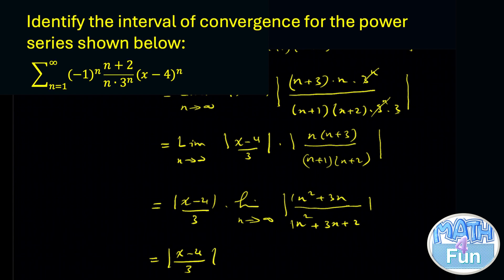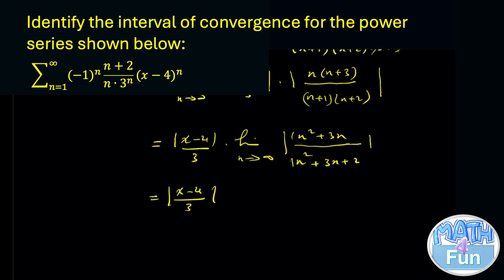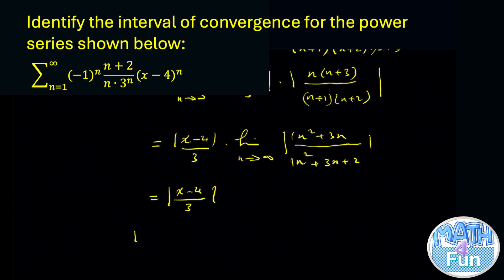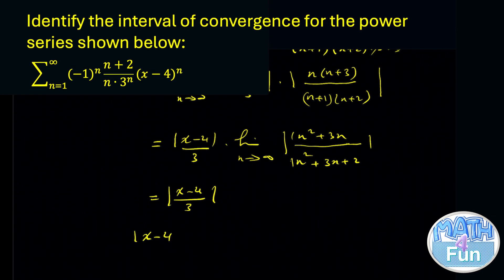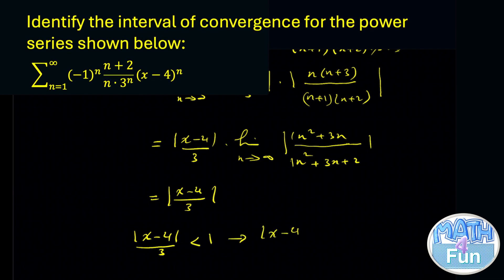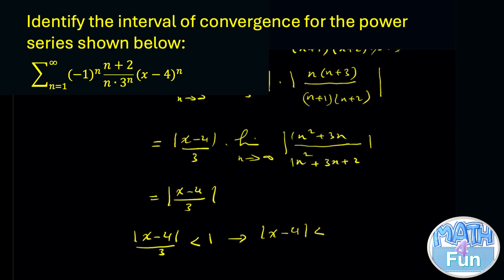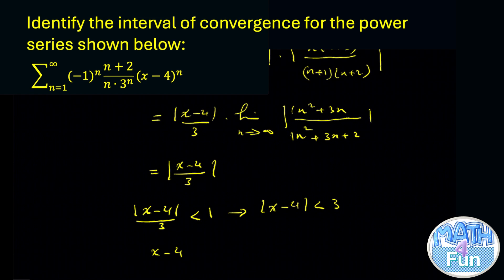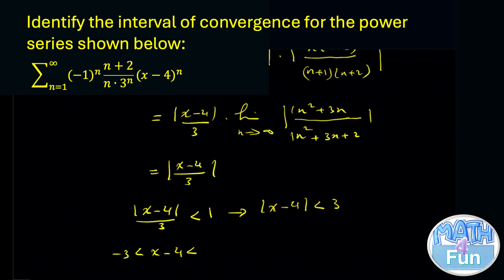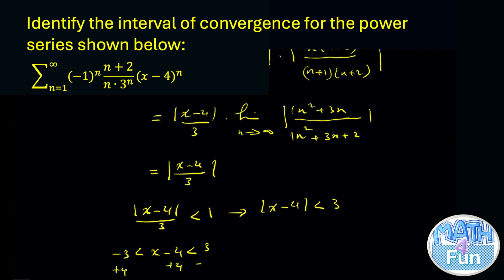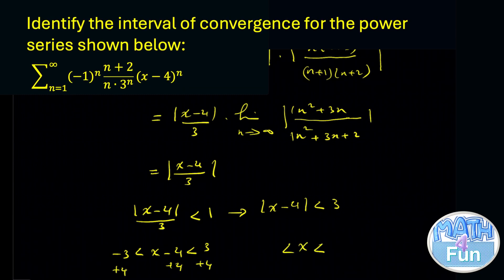For the series to converge, this limit must be less than 1. So we need the absolute value of x minus 4 over 3 to be less than 1, which leads to the absolute value of x minus 4 being less than 3. This implies that x minus 4 is between negative 3 and 3.